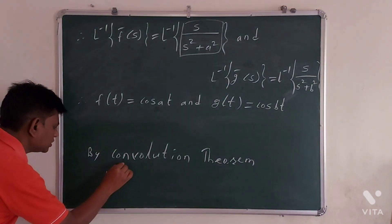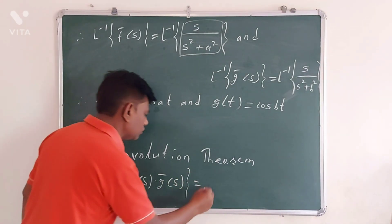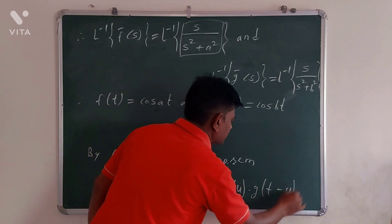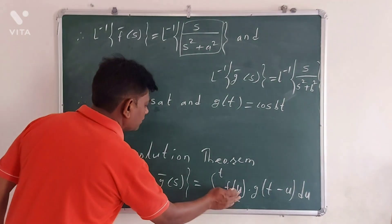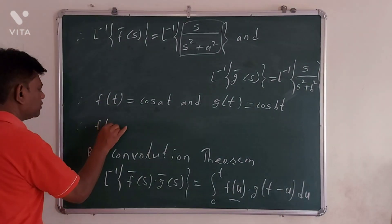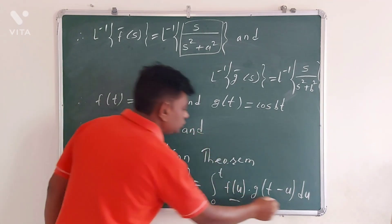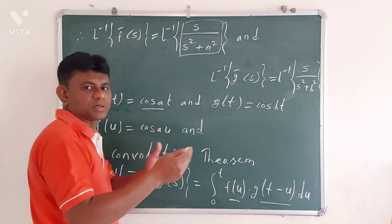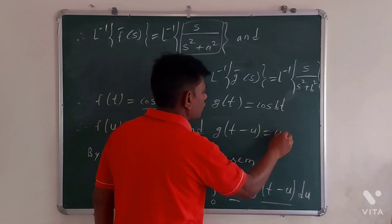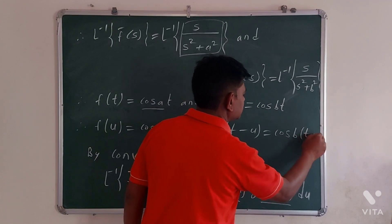Now by the convolution theorem, L inverse of f̄(s) times ḡ(s) equals the integral from 0 to t of f(u) times g(t minus u) du. In this problem, f(u) is obtained from f(t) by replacing t with u, giving cos(au). And g(t minus u) equals cos(b times (t minus u)).